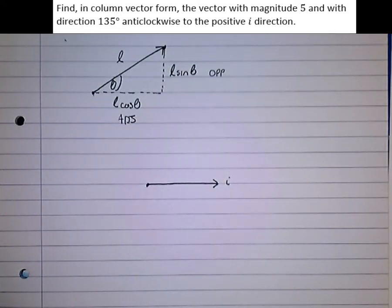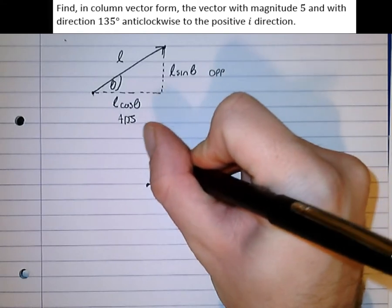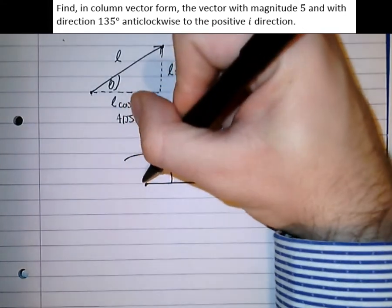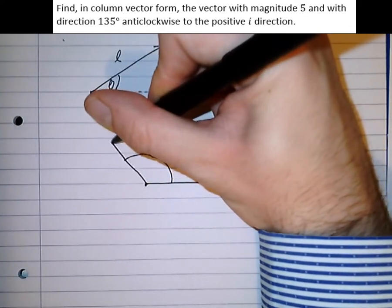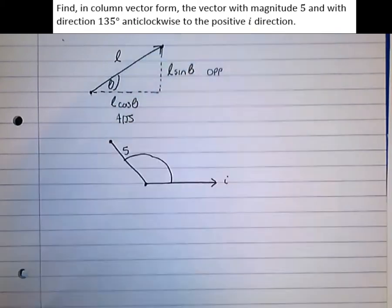Right, so we need the direction to be 135 degrees anticlockwise to the i direction. So let's start at the i direction and go around 135 degrees approximately. OK, about there. So our vector is going to be in that direction and have length or magnitude 5.